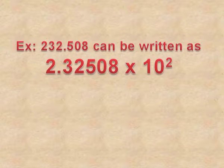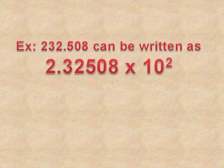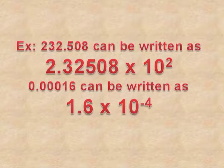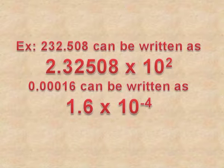For example, 232.508 in scientific notation can be written as 2.32508 × 10². Here, we have shifted the decimal two places towards the left. When the decimal is shifted two places left, the exponent is positive 2. Another example: 0.00016 can be written as 1.6 × 10⁻⁴. Here the decimal shifts four places towards the right, so we put a negative sign with the exponent.